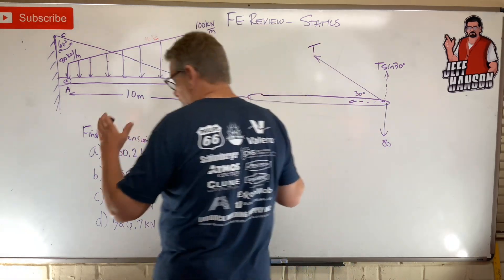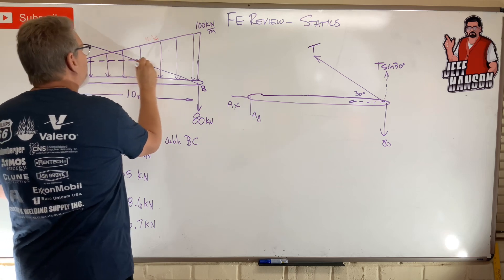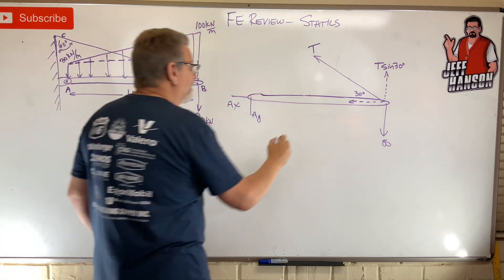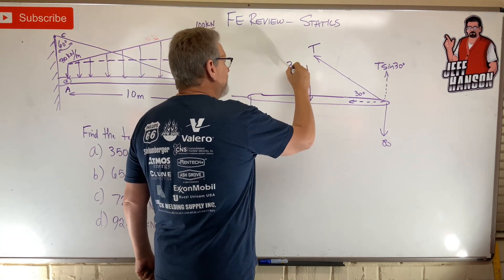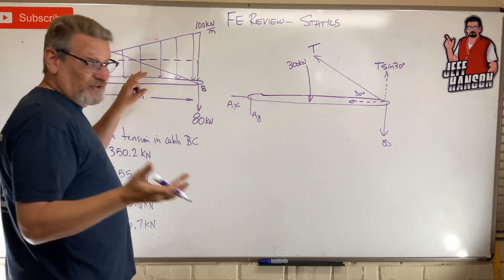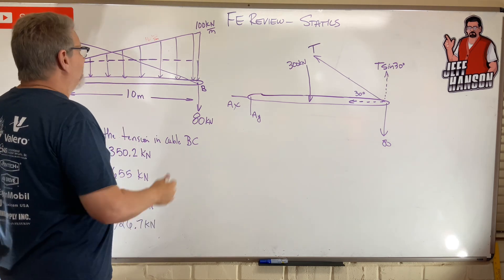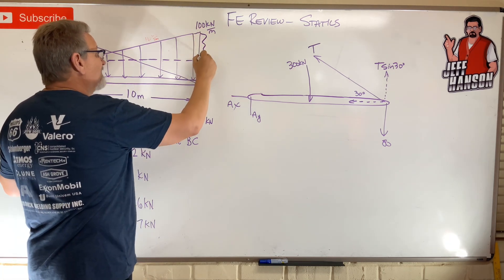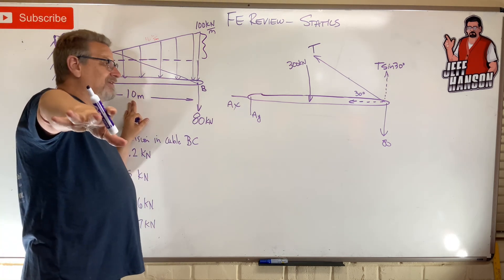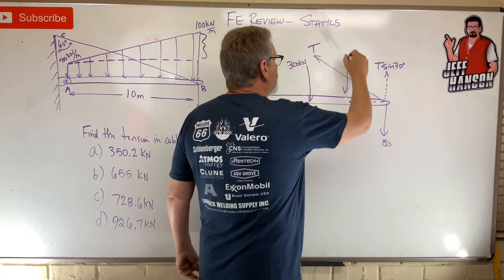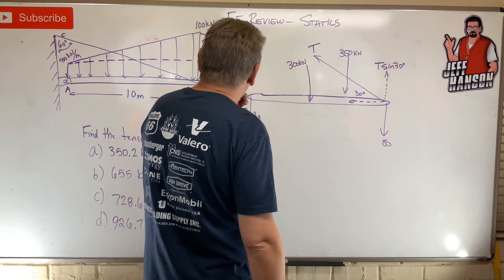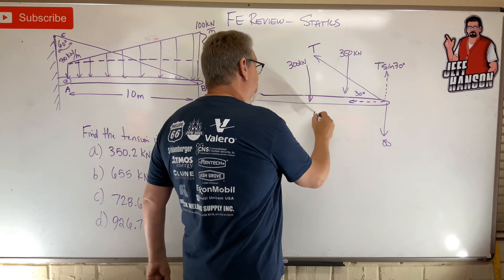Next, we need to take this distributed load and divide it into parts. We've got a rectangular load, which is 30 times 10 — that's 300 — applied right in the middle. Then, if this is 30 and that's 100, this must be 70. So 70 times 10 is 700 divided by two, making it 350 — applied at two-thirds of the 10.